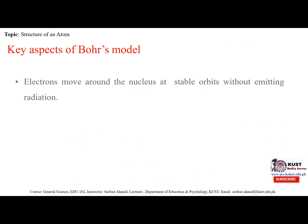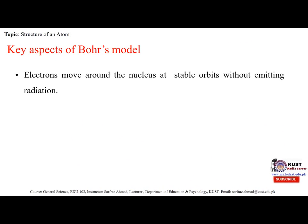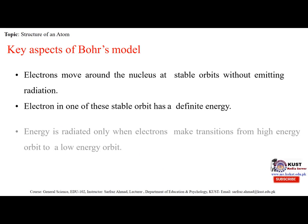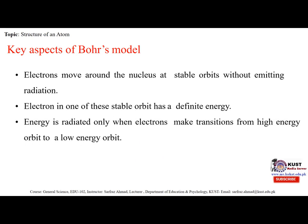Key aspects of the Bohr model are: electrons move around the nucleus in stable orbits without emitting radiation; an electron in one of these stable orbits has a definite energy; and energy is radiated only when electrons make transitions from a high energy orbit to a low energy orbit.